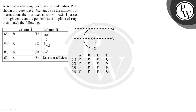A semicircular ring has mass M and radius R. Let I1, I2, I3, and I4 be the moment of inertia about the four axes shown in the figure. The moment of inertia about axis 1, which passes through the center perpendicular to the plane of the ring, will be I1 = MR².